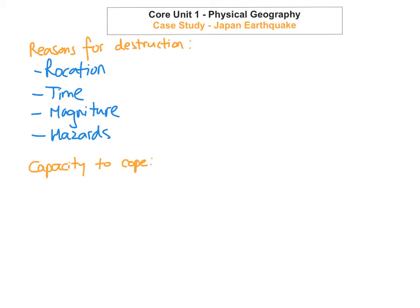We're going to look at the capacity to cope that Japan has — what measures it puts in place to try to reduce the impact of destruction. Japan does earthquake drills every year on the 1st of September, which is National Earthquake Day. This helps their capacity to cope because all the children, adults, and everyone in emergency services know what to do in the case of an earthquake.